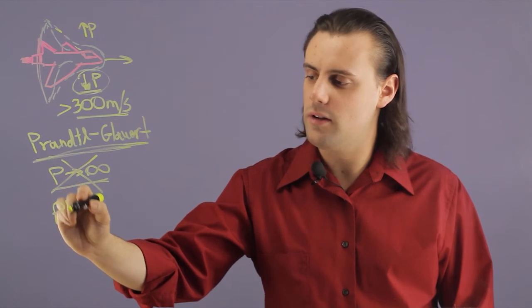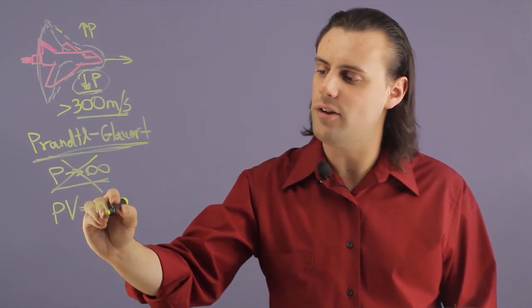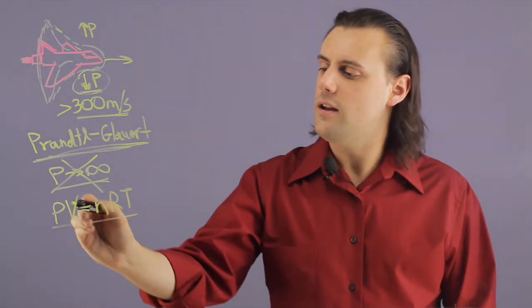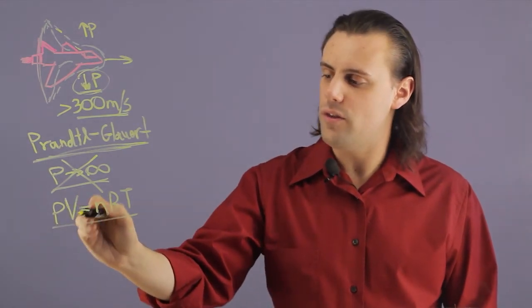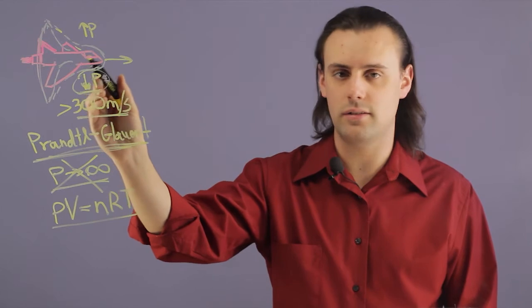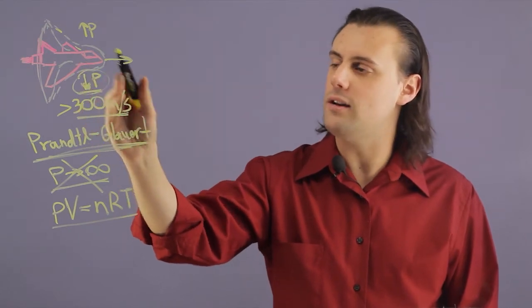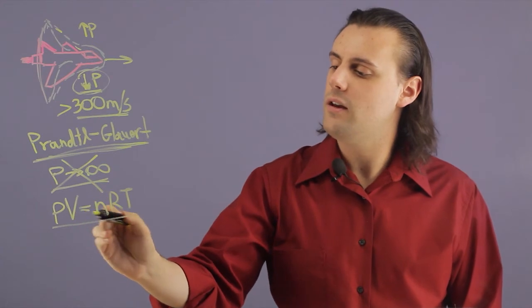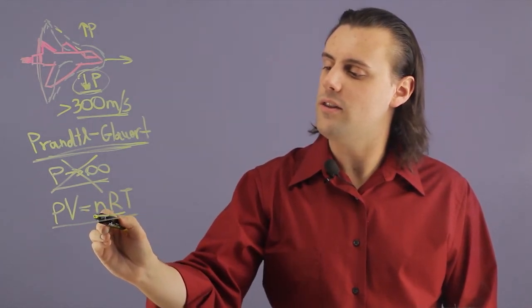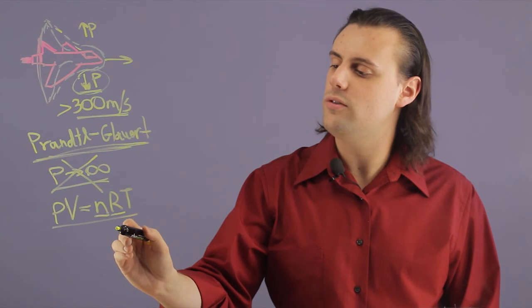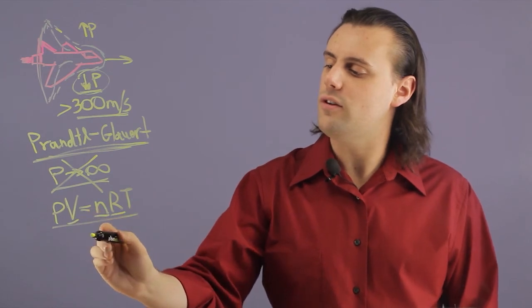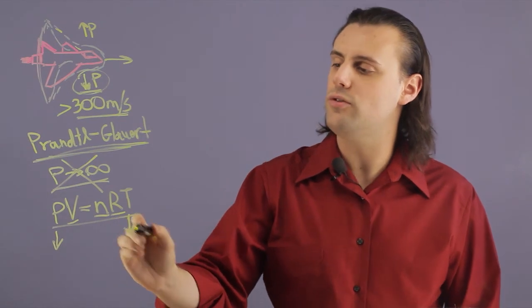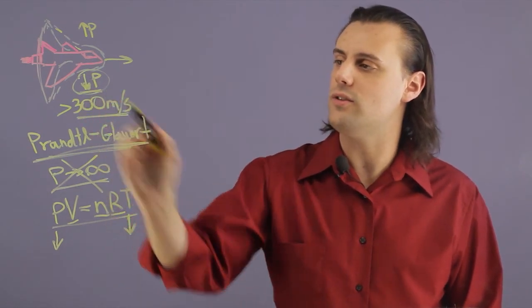if you assume the ideal gas law to somewhat hold, then in the regions where the volume is conserved because this is a great deal of change in a small amount of time, this is the gas constant and this is the number of moles. If these are conserved, then as the pressure decreases, the temperature must also decrease in these regions of low pressure.